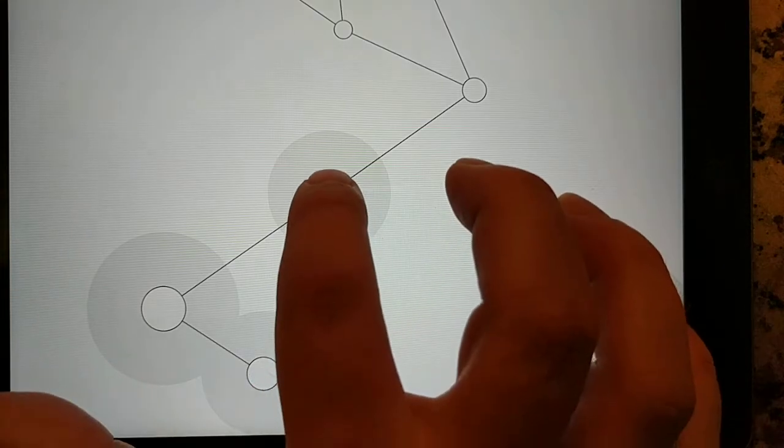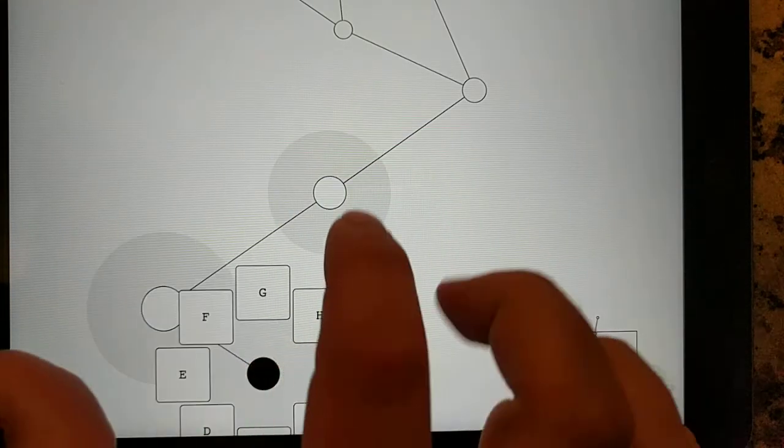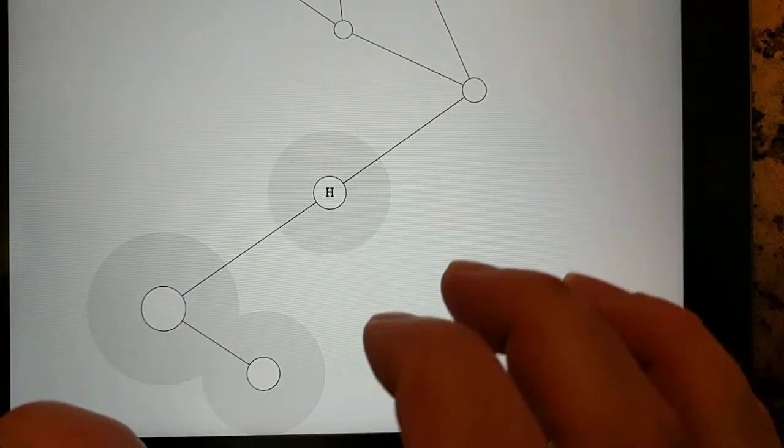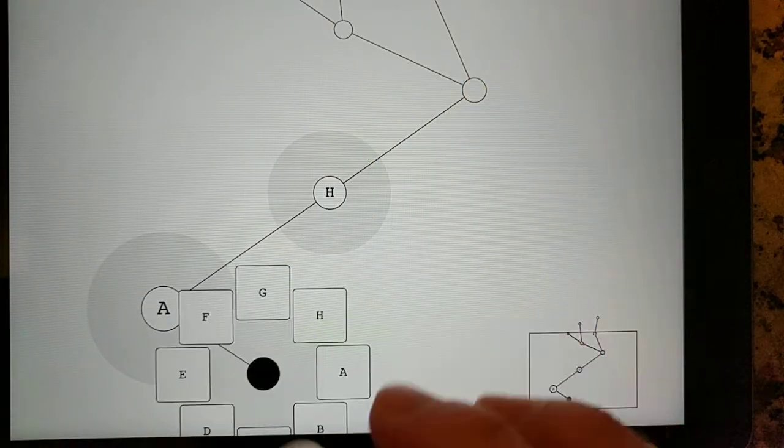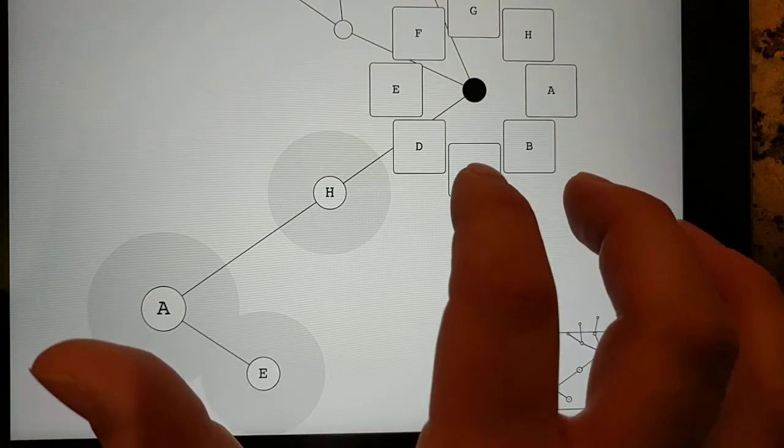There's a context menu for each of these nodes that you can access by tapping it. Right now it's just letting us set letters for these nodes, but it could potentially have other functionality as well.